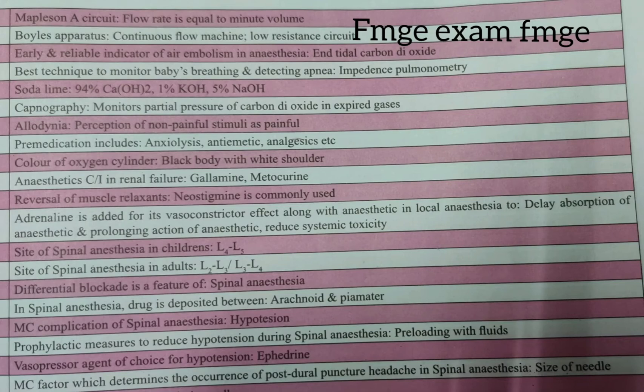Site of spinal anesthesia in children is L4 and L5. Site of spinal anesthesia in adults is L2 and L3. Differential blockade is a feature of spinal anesthesia.